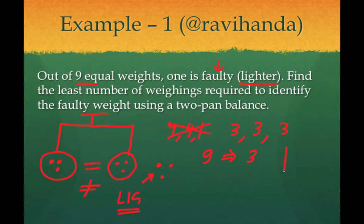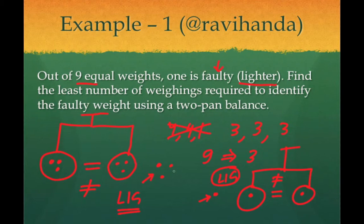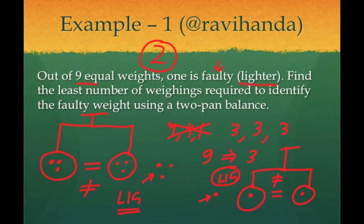Now you do a weighing again. From the three weights you have, compare just two of them and keep one outside. If it comes as equal, the one outside is faulty. If it comes as unequal, whichever was the lighter weight is the faulty one. You have found the answer in just two weighings — first breaking it down as three-three-three, then as one-one-one. So two weighings are required when there are nine equal weights and one of them is faulty.